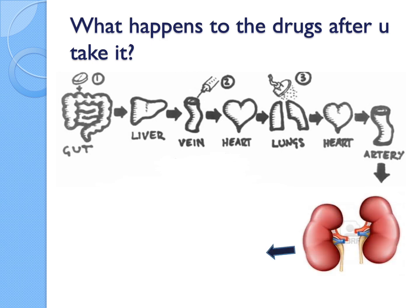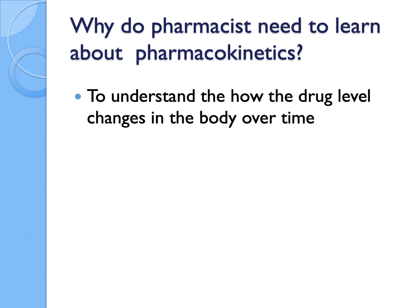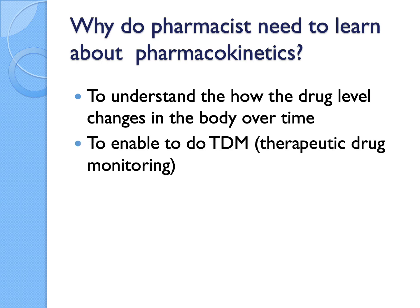It goes round and round until eventually it gets excreted through the kidney mainly. Remember this metabolism process — it could be something that you want for the drugs, but most of the time it could break down the medications and render the drug inactive. But sometimes it's okay because it can transform it into an active metabolite. Why do we need to learn about pharmacokinetics? Because you need to understand how drug levels change over time, so you know how much to give and when to give it. The main thing is you can then do something called TDM — therapeutic drug monitoring — a service performed by inpatient pharmacy in the hospital.